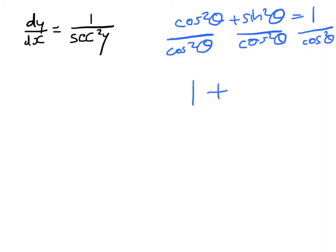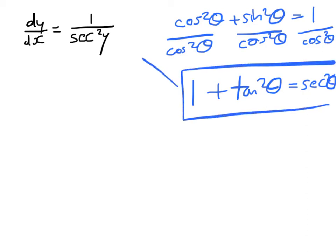That, of course, gives me 1 plus... Well, sine squared over cosine squared is the tangent squared. And 1 over cosine squared is the secant squared. That's what I was trying to generate. So I can then use this identity to turn this back into the tangent of something.